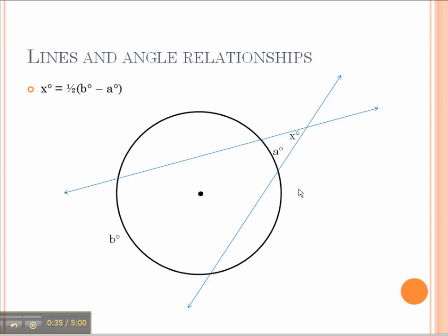As you can see, other lines can create intersections outside the circle as well, such as between two tangents or a secant and a tangent.